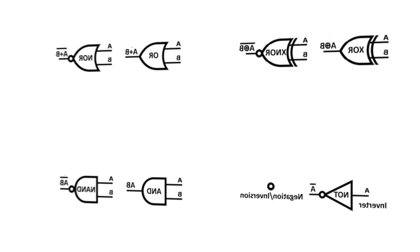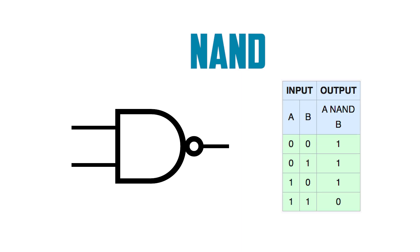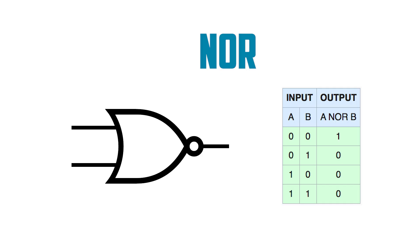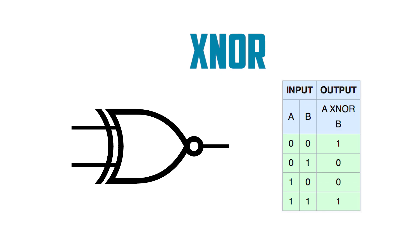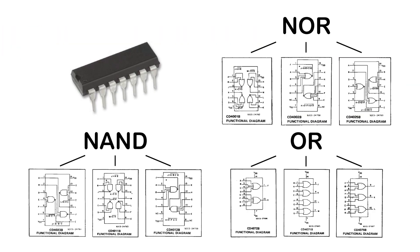Much of electronics revolves around logic: if this is happening, then this should happen. This is where logic gates come in. A logic gate uses the conditions of its input or inputs to determine the state of its output. They include NOT gates (also called inverters), AND, NAND, OR, NOR, XOR, and XNOR. In the same category, there are also flip-flops and latches. With each logic gate only requiring a few pins, rather than being packaged individually, they are often bundled together with multiple gates in a single chip.